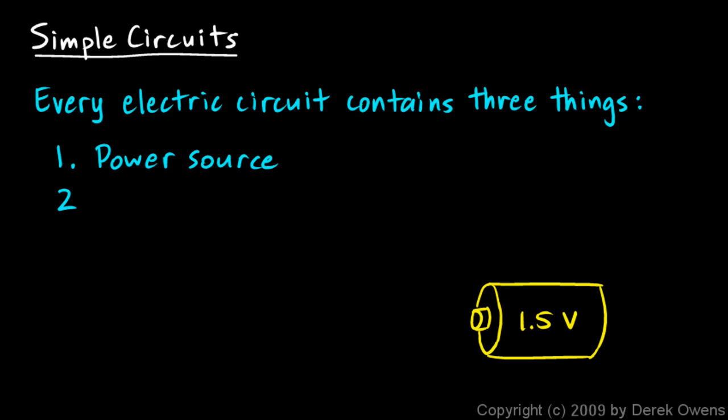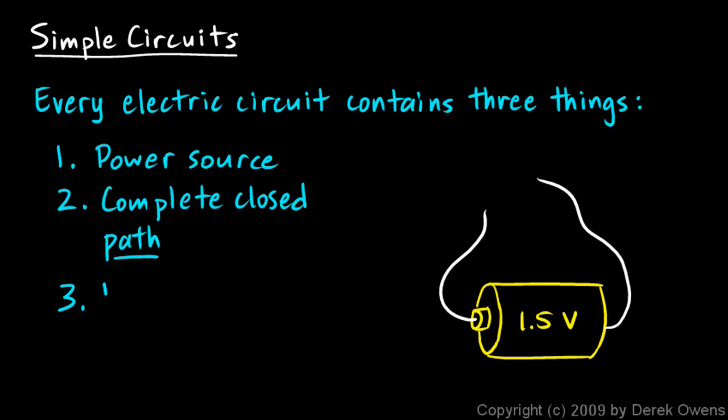The second thing is a complete closed path, and that typically consists of some wires as well as whatever else is in the circuit. So I'll draw some wires here attached to this battery. And then the third thing that every circuit needs is a load, what electricians call the load on the circuit. That's the thing that uses the energy.